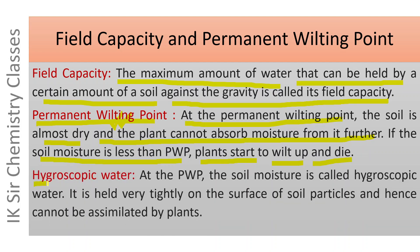There is another term: hygroscopic water. At the permanent wilting point, the soil moisture is called hygroscopic water. It is held very tightly on the surface of soil particles and hence cannot be assimilated by plants. If soil is completely dry and exposed to air, it absorbs this amount of water, hence it is also called hygroscopic water.